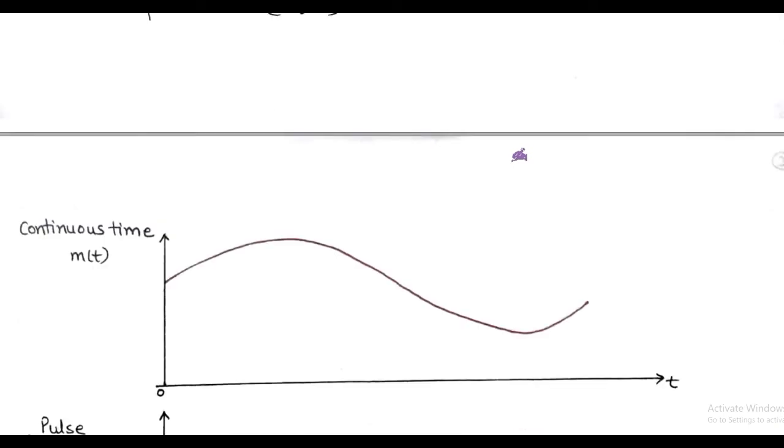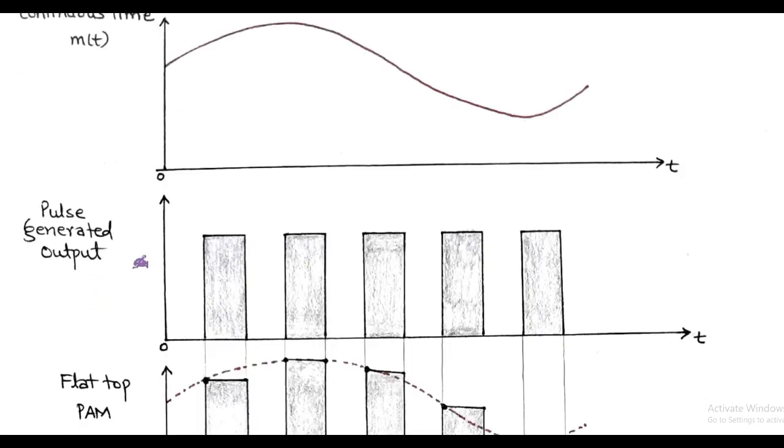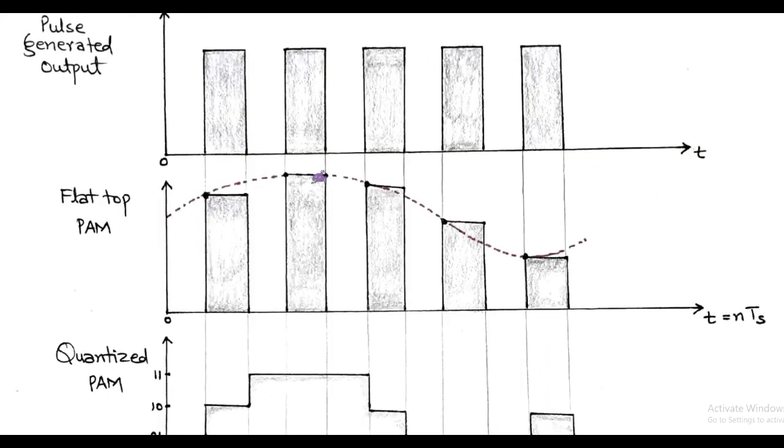Now let us understand pulse code modulation graphically. For this, we consider any arbitrary continuous time modulating signal m(t) and a periodic pulse train having constant amplitude and width. After flat top sampling process, we get pulse amplitude modulated signal. So after sampling, we perform non-uniform quantization.